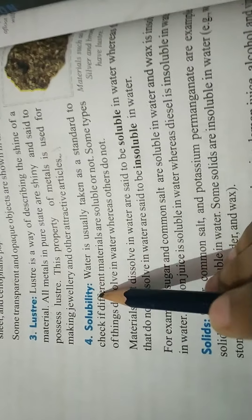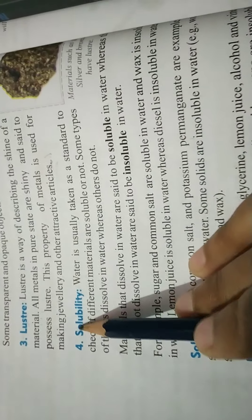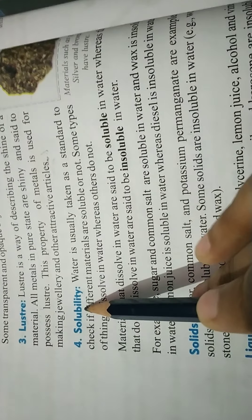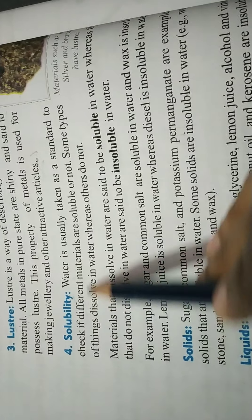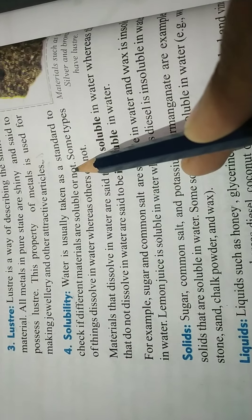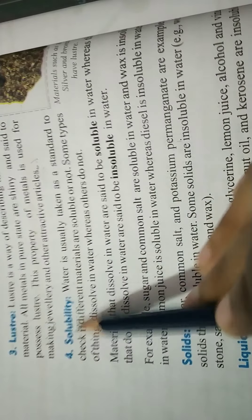Solubility is the next property. Basically, solubility means whether the material is dissolving in water or not. Water is usually taken as a standard to check if different materials are soluble or not.